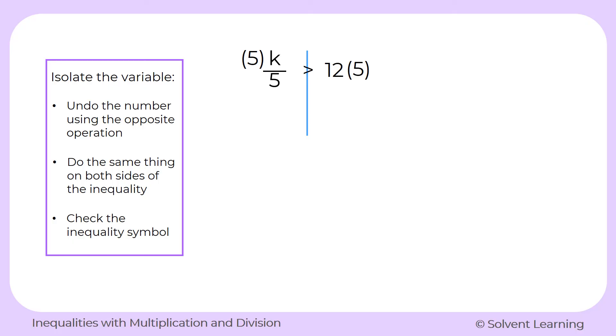So on the left side, we have 5 in the numerator and 5 in the denominator. They will cancel each other out. Just like in the last problem we saw, we have the same number in the numerator and denominator. It simplifies to just 1 and we would end up with 1 times k for this problem, which is the same as k.